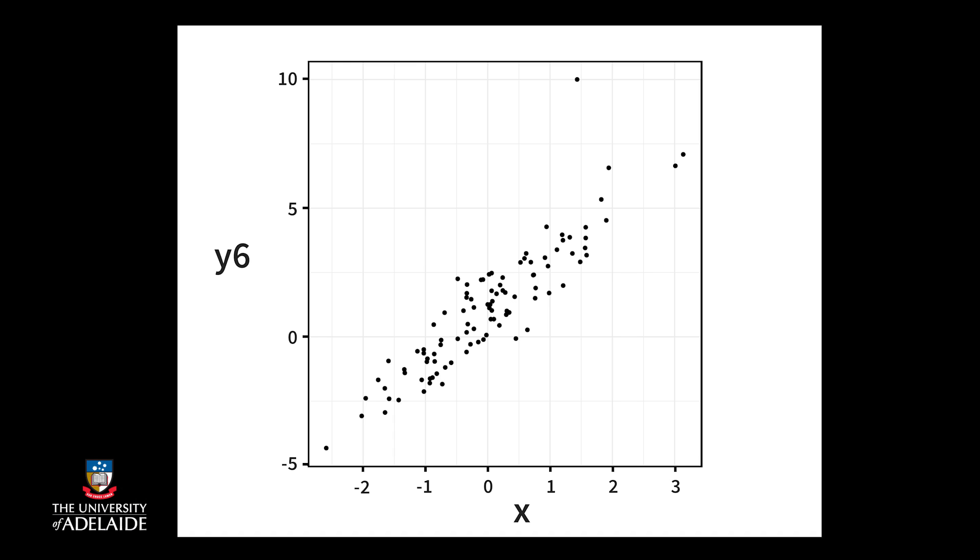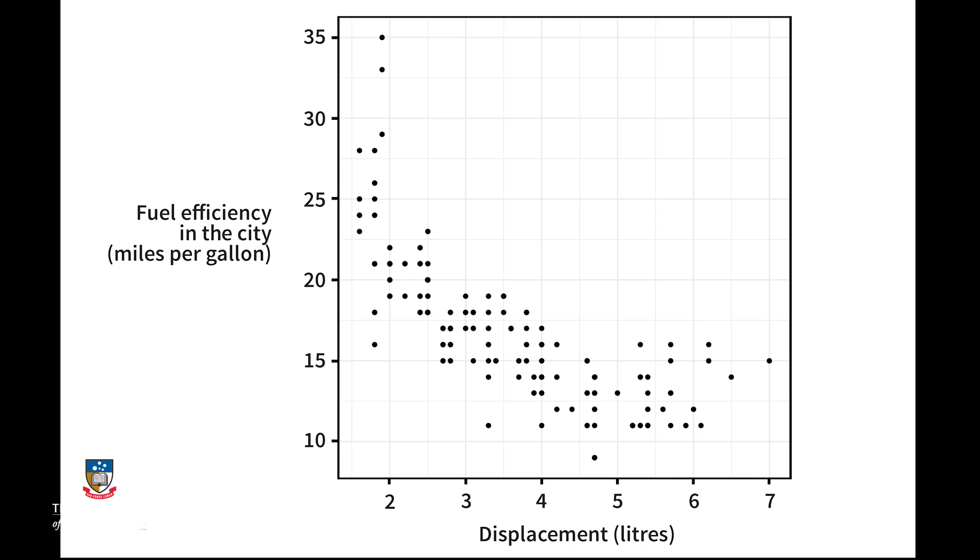We'll look at how to deal with these points in the next section. Finally, you have a go yourself. Back to the MPG dataset. This scatter plot has the city fuel efficiency against the displacement. Describe that relationship.